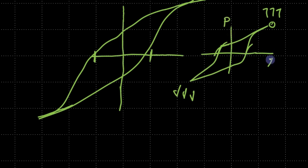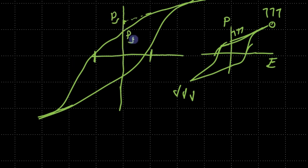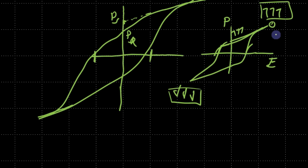These are a ferroelectric hysteresis where at certain points we are completely polarized upward and at others completely polarized downward. Remember, this axis is polarization and this is electric field. As we return back we still have mostly spontaneous polarization upward, but it dips down. A straight line here would give the spontaneous polarization, however the remnant polarization is a little bit less due to the switching back of some polarized domains.